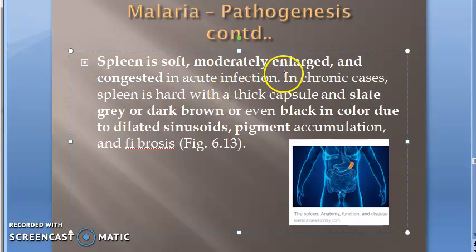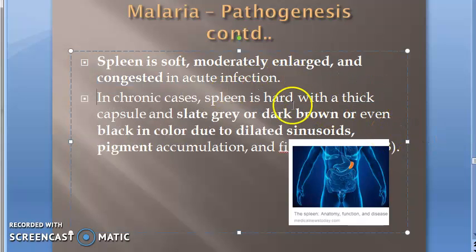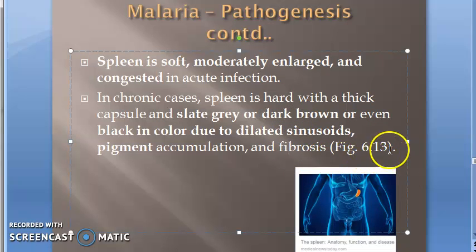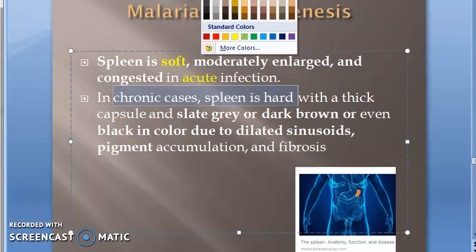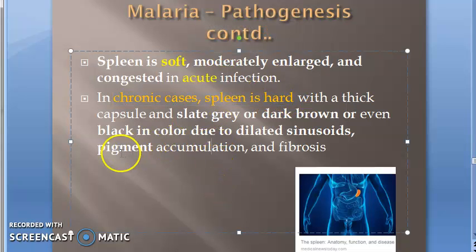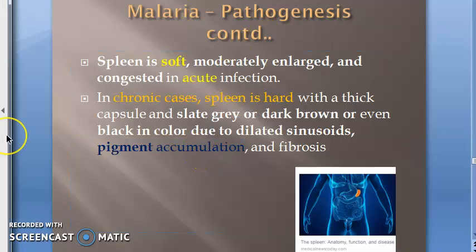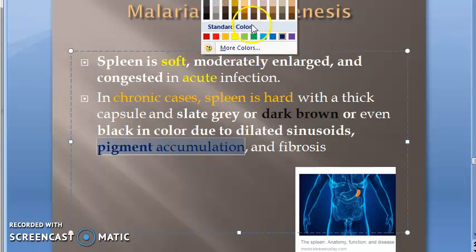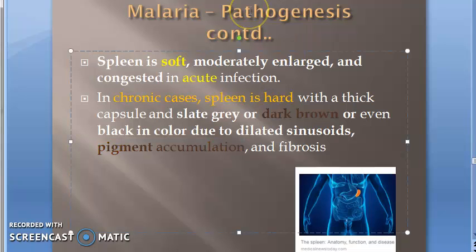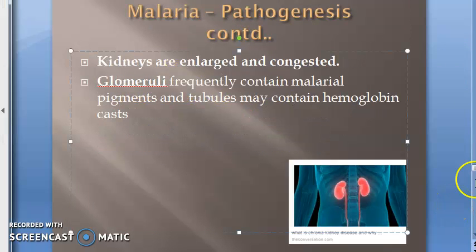The spleen is congested in acute infection. In chronic cases, the spleen is hard, but in acute infection it will be soft. There will be pigment accumulation because the merozoites fed on the hemoglobin. The spleen itself becomes dark brown due to dilated sinusoids, pigment accumulation, and fibrosis.